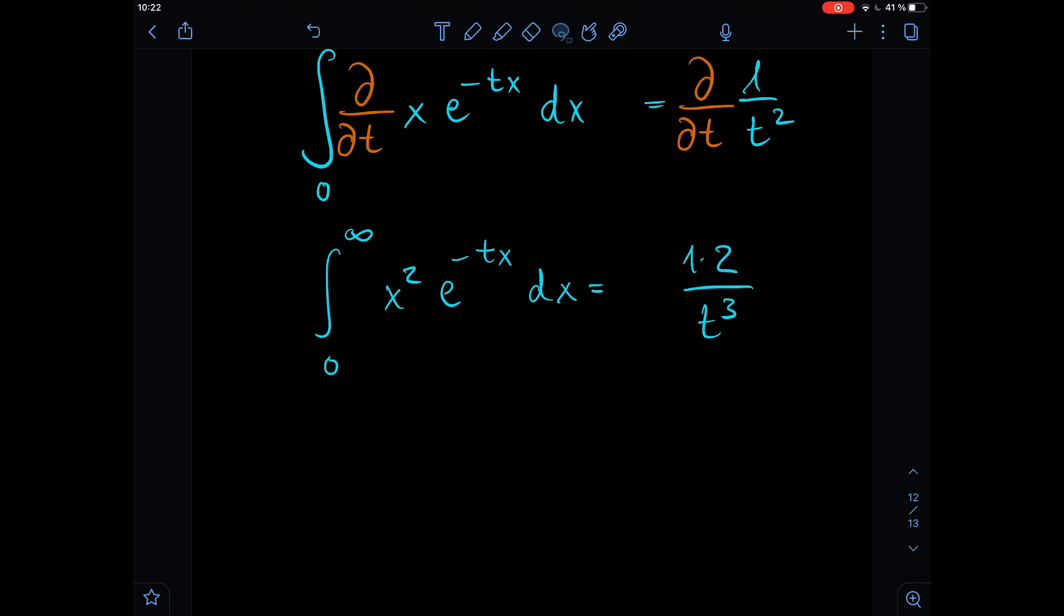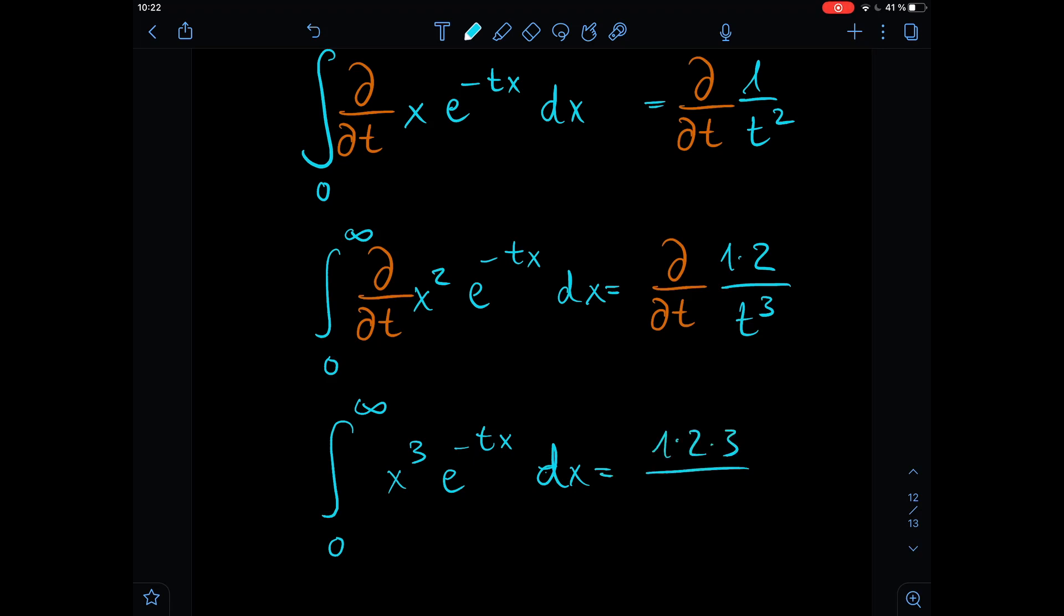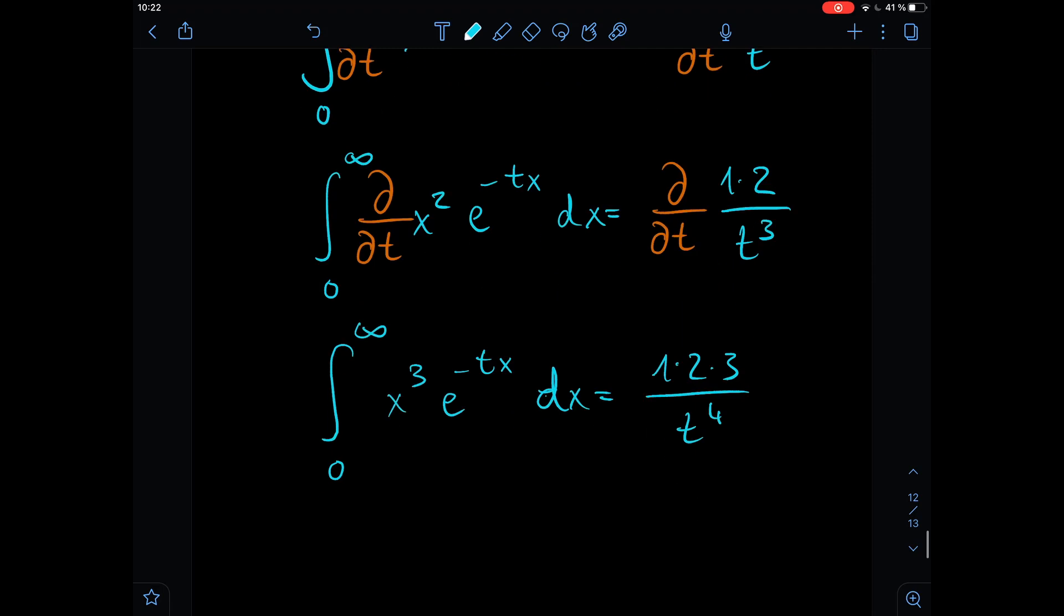We're taking the derivative and see what we get as a result. So let's shift that a little bit again so we can plug in the derivative. So here the derivative with respect to t and here the derivative with respect to t, and what we get as a result is then x to the power of 3 times e to the power of minus tx dx is equal to 1 times 2 times 3 divided by t to the power of 4.